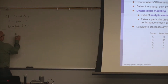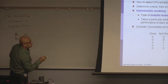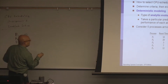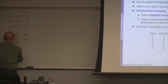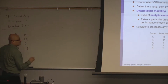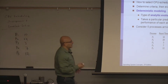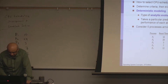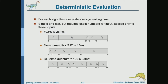We have process one with a CPU burst of 10, process two with a CPU burst of 29, process three with a CPU burst of 3, process four with a CPU burst of 7, and process five with a CPU burst of 12. We'll look at three different scheduling algorithms: first come first served, non-preemptive shortest job first, and round-robin.